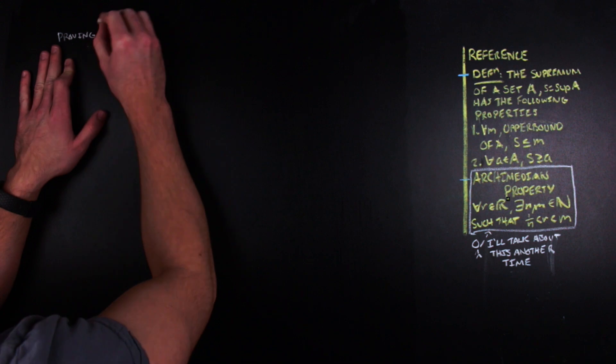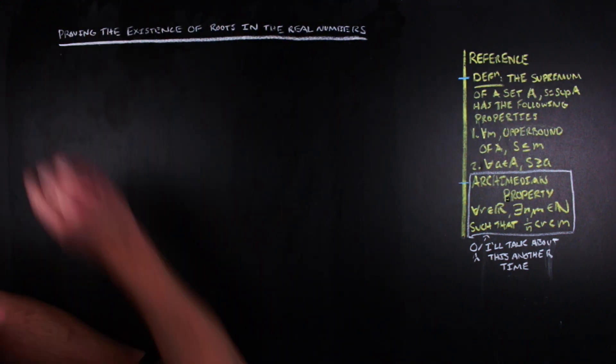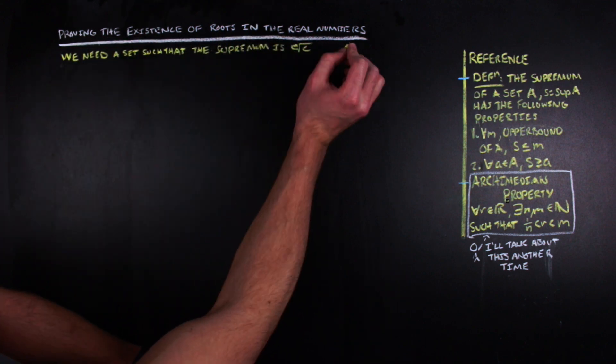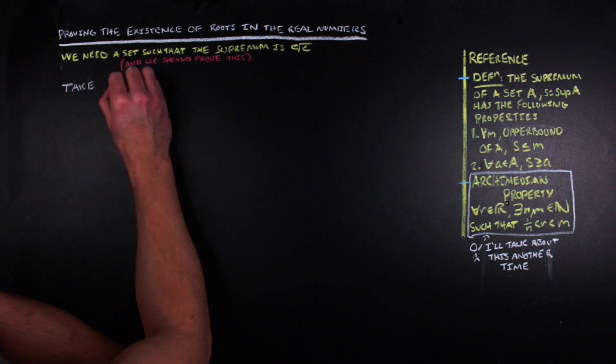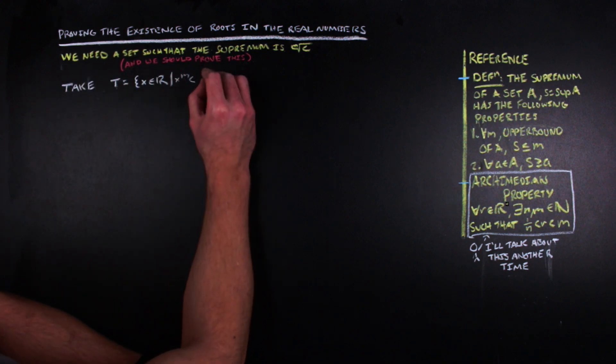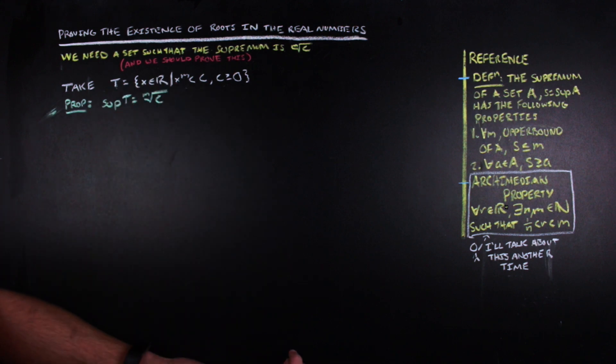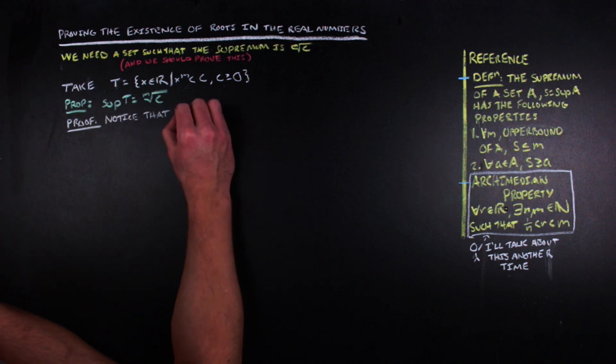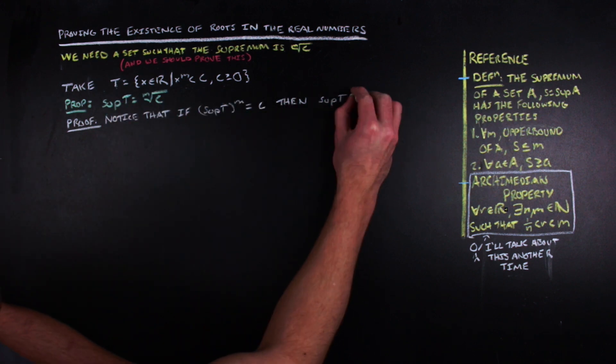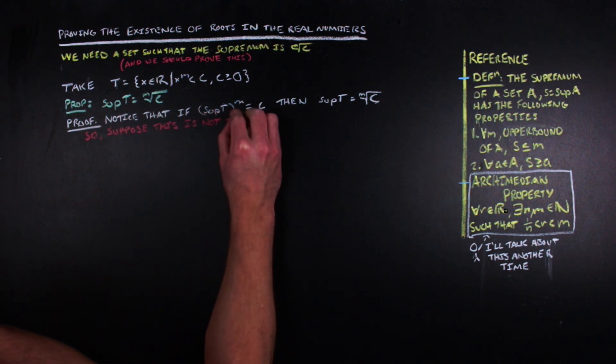So with those two things addressed, we can continue on with our argument to prove existence of roots in the real numbers. So like I mentioned before, we need a set where we think the supremum of that set is an mth root, and then we just need to prove that the set in question actually has that supremum. We'll just take t equal to the set of all real x such that x to the mth power is less than c. Our proposition is that the supremum of our set t is the mth root of c. So there are two properties of the supremum and we're gonna need to be able to appeal to both of them in order to successfully prove the existence of roots.